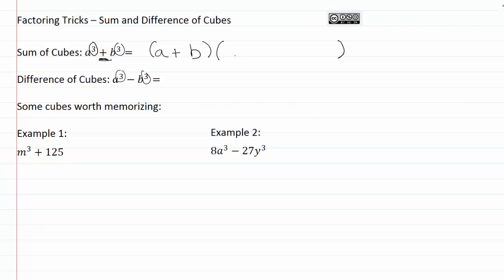My three terms are going to be the first term squared, so I'll have a squared. Then my middle term for the second set of parentheses is actually going to be these two multiplied together — a times b, the first and last term from my first set of parentheses multiplied together. I like to remember that as mixing everything together in the middle. And my last term will be b squared, so my last term squared becomes my new last term.